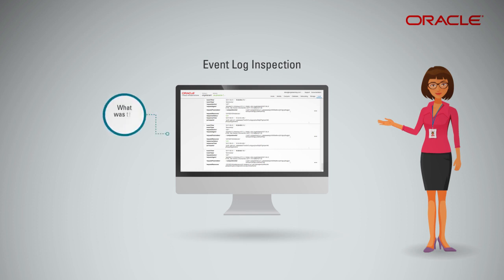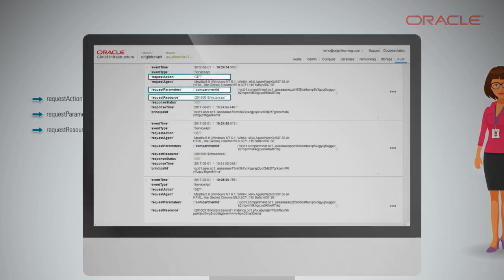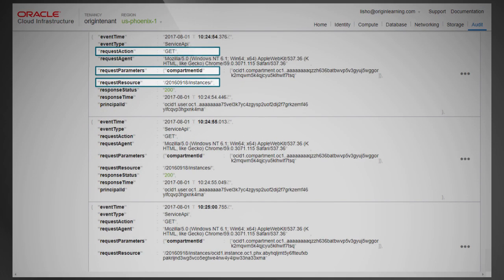What was the activity? For this you need to examine the fields of request action, request parameters, and request resource. As you can see, the action performed was to get or view details about the compute instance.